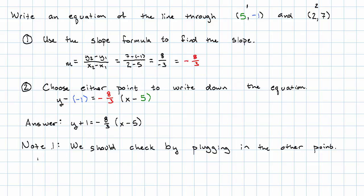Let's see. I'm going to plug in y equals 7. So 7 plus 1 is 8. And on the other side, I'm going to plug in x equals 2. So negative 8 thirds times (2 minus 5) is negative 8 thirds times negative 3. And that really does work out to positive 8. So those really are the same. That point really is on our line.